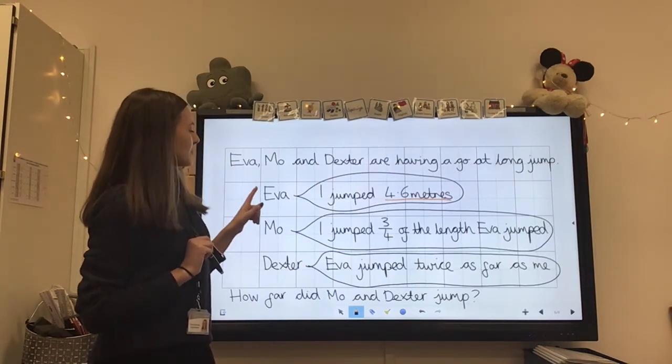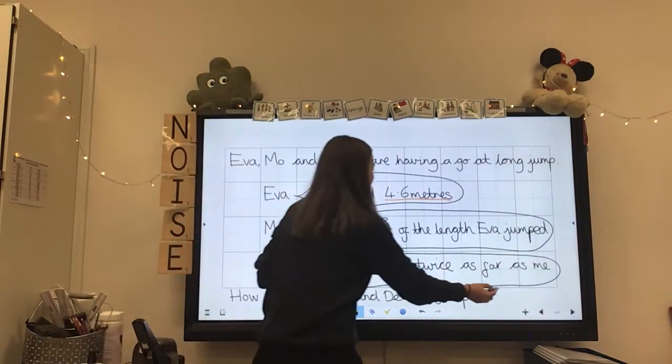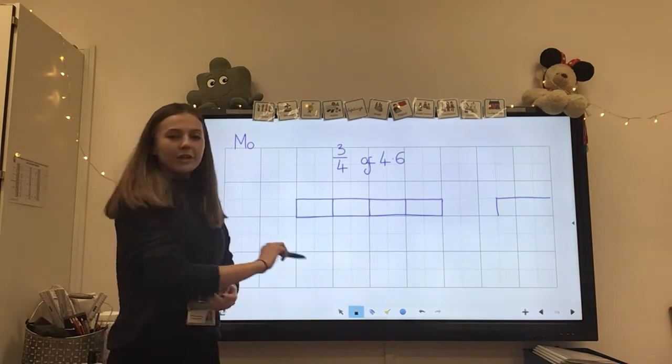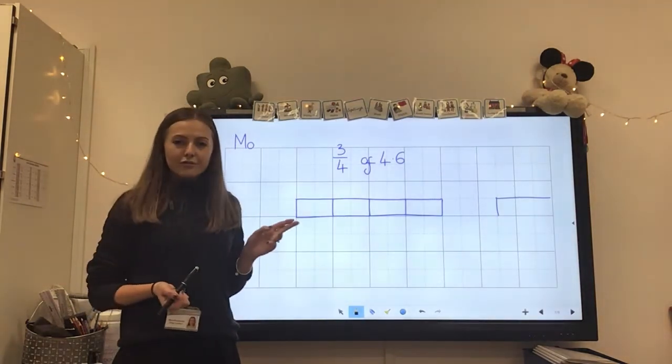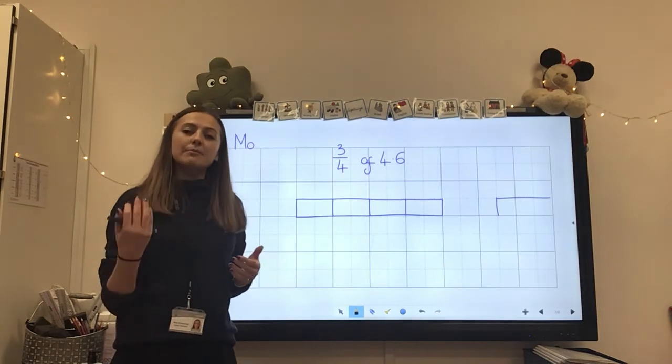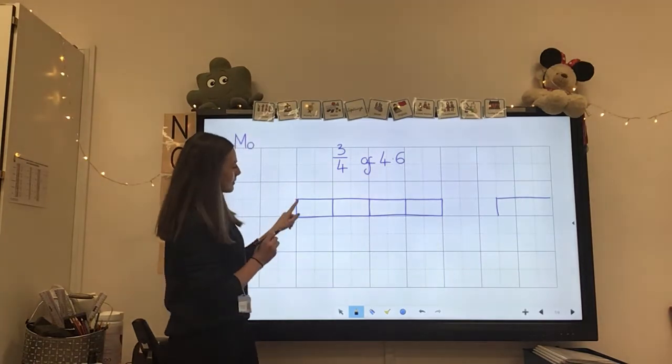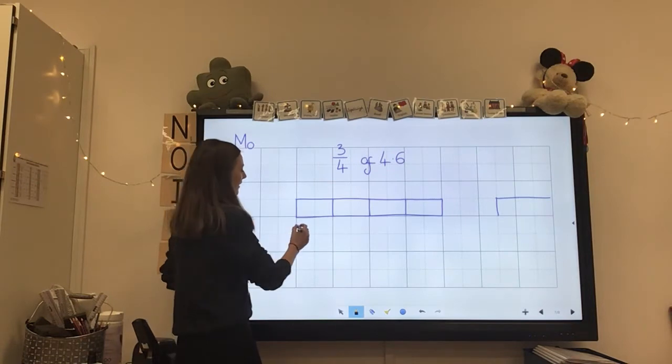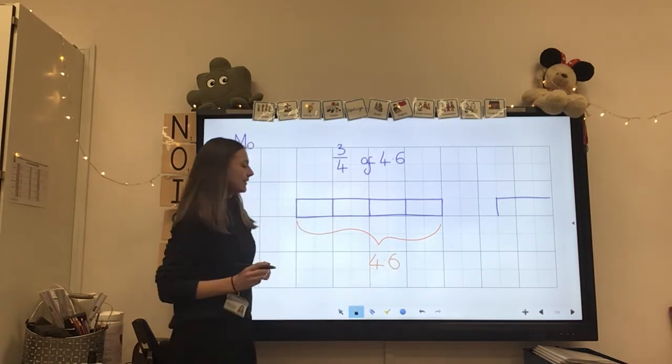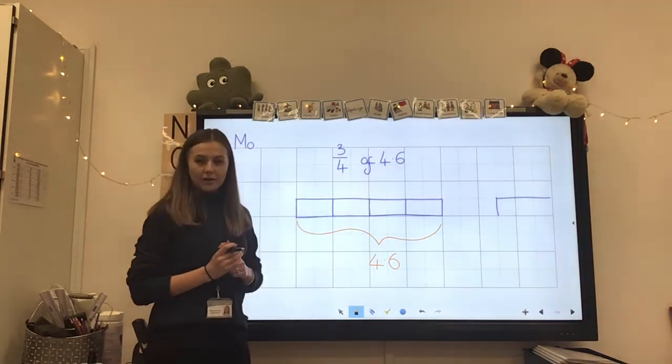And Mo has told us that I jumped three quarters of the length that Eva jumped. Okay, so let's have a look at Mo first. So what we need to work out is three quarters of 4.6. Here we go. And we can do this using a bar model, because we need to find out three quarters of 4.6. But actually, first of all, we need to work out what one quarter is, and then we can multiply that by three to find out what three quarters is. We can do this using a bar model. So here's my bar split into four sections. Okay, and I know that this whole bar equals 4.6.